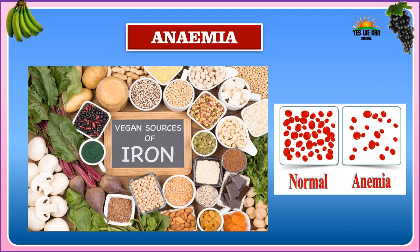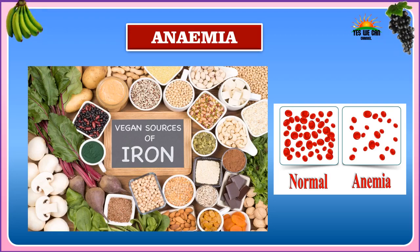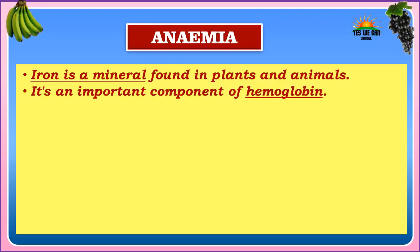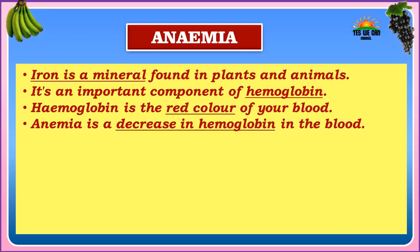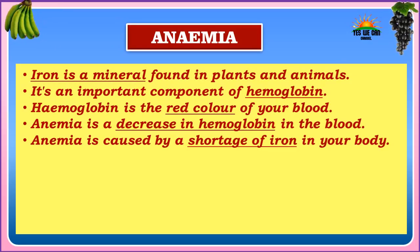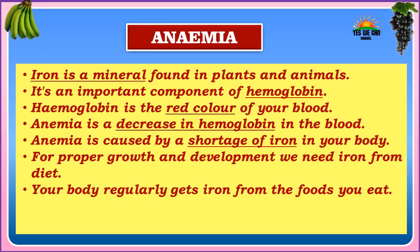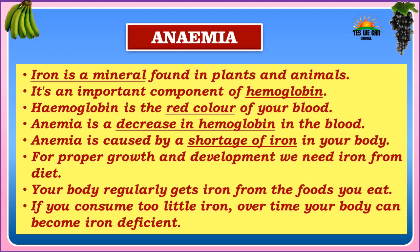So it was mineral iron that Aarti was talking about. This iron is a mineral found in plants and animals — it is an important component of hemoglobin. Hemoglobin is the red color of your blood. Anemia is a decrease in hemoglobin in the blood, caused by a shortage of iron in the body. For proper growth and development, we need iron from diet. If you consume too little iron, over time your body can become iron deficient.